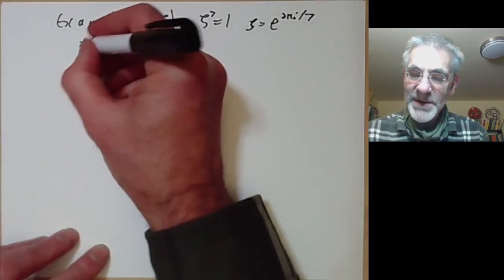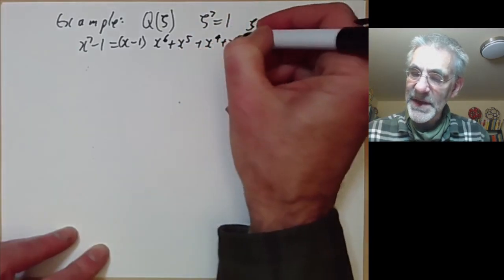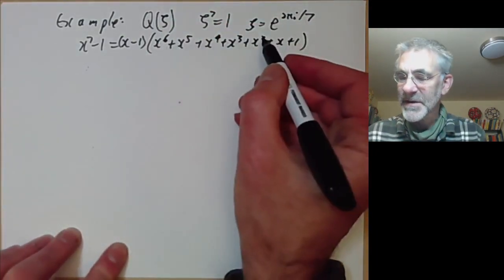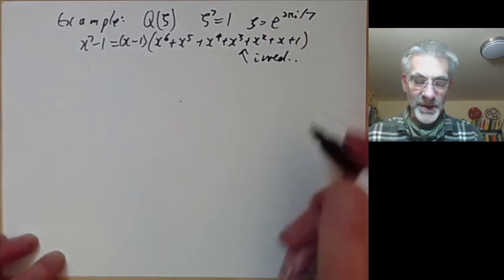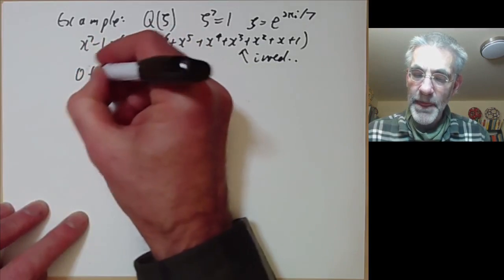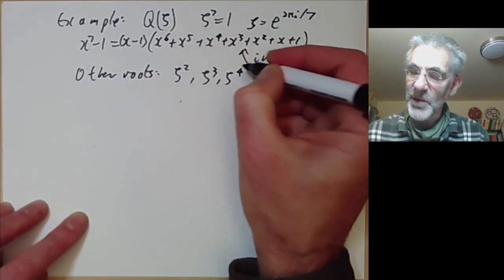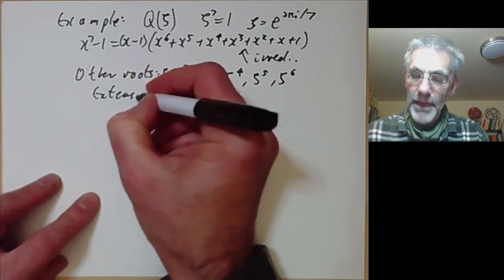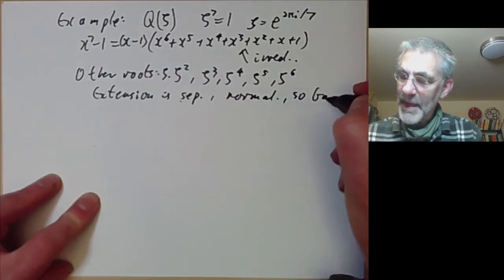The polynomial x⁷ − 1 is not irreducible; it equals (x−1)(x⁶ + x⁵ + x⁴ + x³ + x² + x + 1). The degree-6 cyclotomic factor is irreducible, as can be shown by Eisenstein's criterion after substituting x ↦ x+1. If ζ is one root, the other roots are ζ², ζ³, ζ⁴, ζ⁵, ζ⁶. The extension is separable (characteristic zero) and normal (splitting field of a polynomial), so it is a Galois extension.